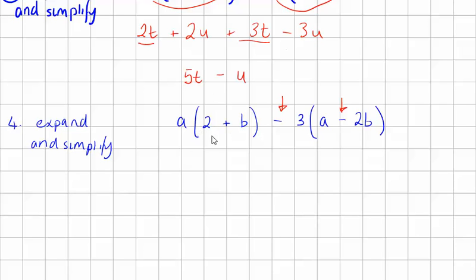So the first bit is easy enough. Sophie, do you want to have a time? Two a plus ab. Two a plus ab, yeah, that's fine. Then we have, this sign sticks with that number. So we have negative three times a, which is? Negative three a.